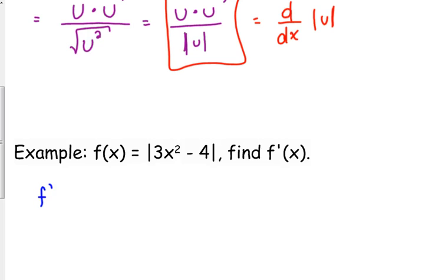So f prime in this case would be, you can really do this in any order that you want to do it, but the rule was written as the derivative of what's on the inside, so the derivative of that is 6x times what's on the inside over the absolute value expression itself.